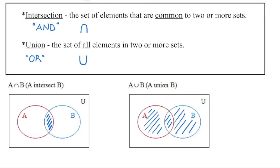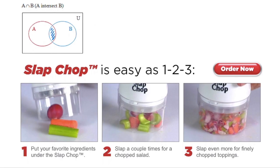There are two really important symbols we have to note: the intersection symbol and the union symbol. The intersection refers to all elements common to two or more sets. For example, the intersection of A and B is the middle region on the Venn diagram — where we list all elements that are part of both set A and B.